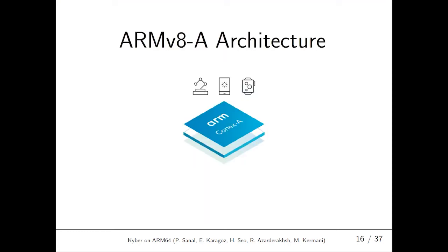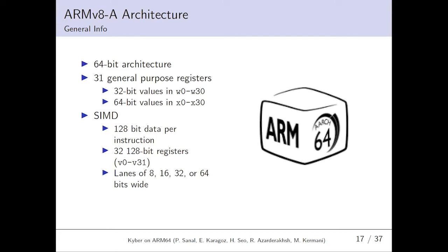ARMv8 architecture. Here includes the general information. ARMv8 is a 64-bit architecture. It provides 31 general purpose registers. Registers W0 to W30 holding 32-bit values and registers X0 to X30 holding 64-bit values. It also provides SIMD, single instruction multiple data registers and instruction set. It processes 1 to 8-bit data per instruction on average. The registers are labeled from V0 to V31. Each vector register has the length of 8, 16, 32 or 64-bit wide.